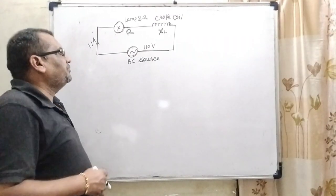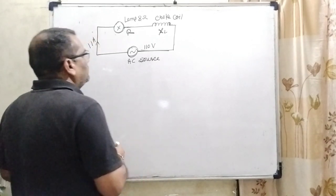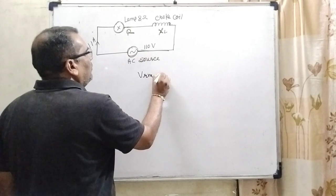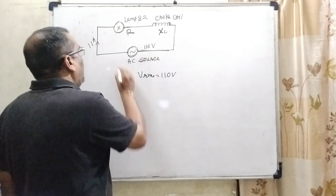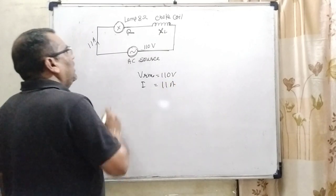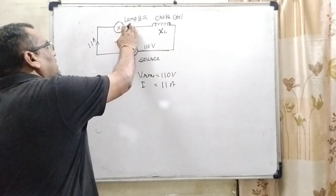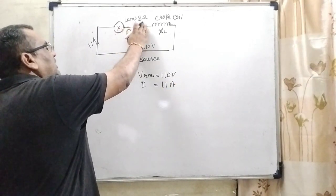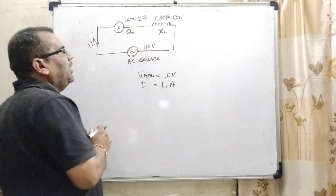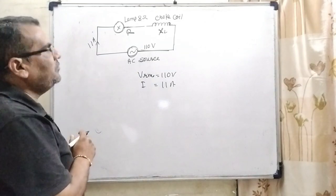Now, in this question, we have given input potential means Vrms is given 110 volt and current is given I equal to 11 ampere. And here, the resistance of the lamp is given that is 8 ohm. And we have to find out inductive reactance XL of choke coil.